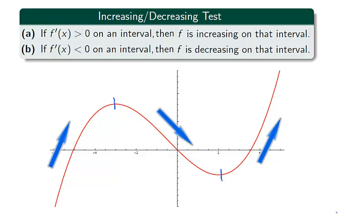If the derivative of a function is continuous, by the intermediate value theorem, a value must exist which has a 0 derivative whenever the derivative changes from positive to negative or negative to positive.